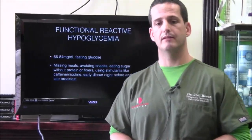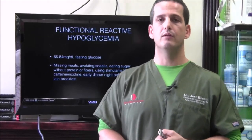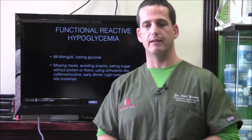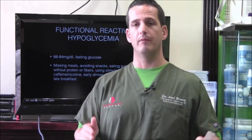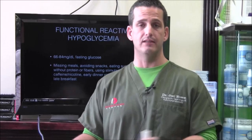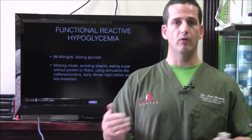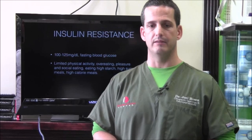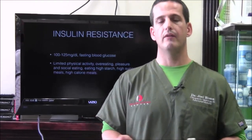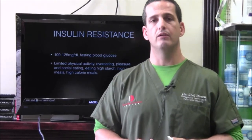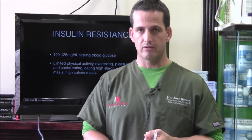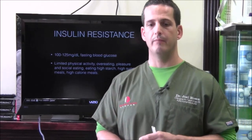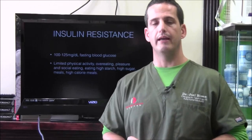Functional reactive hypoglycemia is in the 66 to 84 range. These are people who miss meals, avoid snacks, eat a lot of sugar without protein or fiber, use stimulants like nicotine, and wait way too long between dinner and breakfast — maybe eating at 6 p.m. and not eating again until 11 a.m. the next day. Insulin resistance is in the 100 to 125 range: fasting blood glucose is elevated, physical activity is limited, too many calories per meal, eating high starches, high sugars, and high calories.